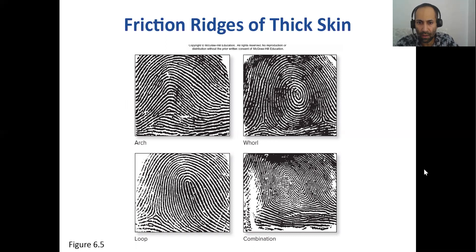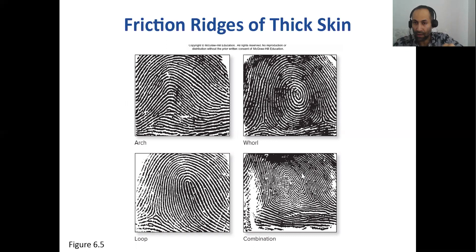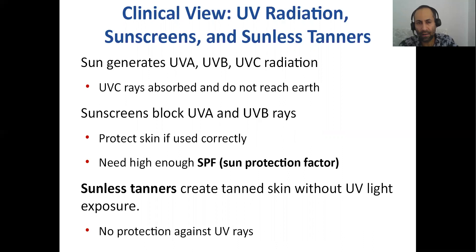No person has the exact same fingerprint pattern on their two hands — they're different. We also have sole prints or footprints, which are completely different on the two feet as well.